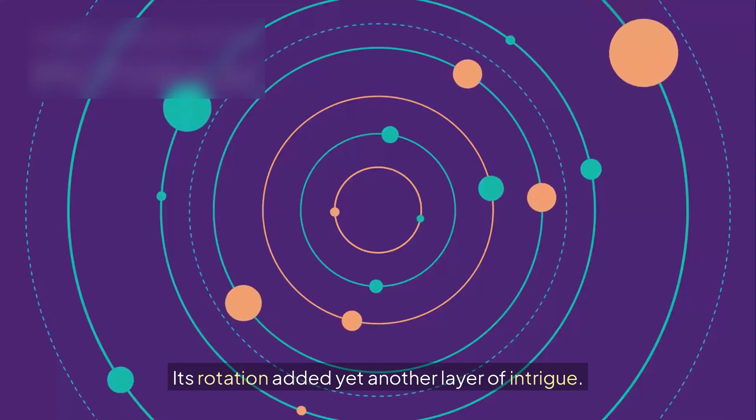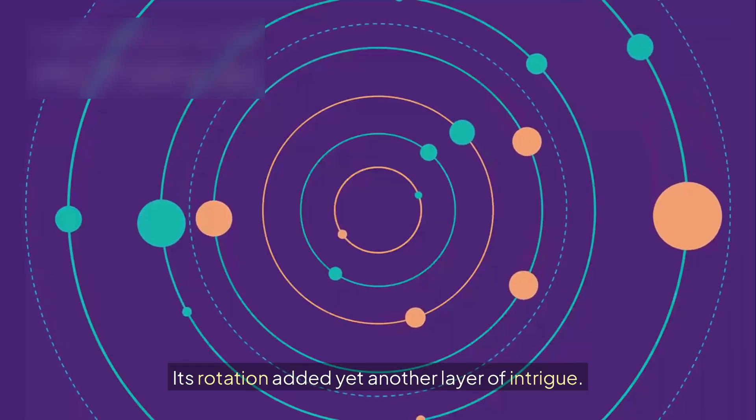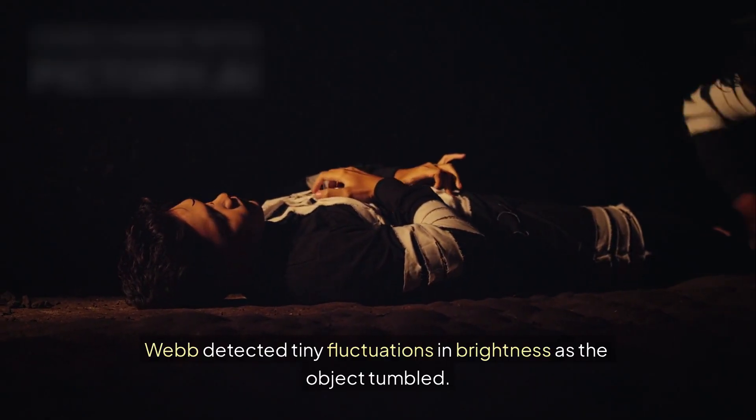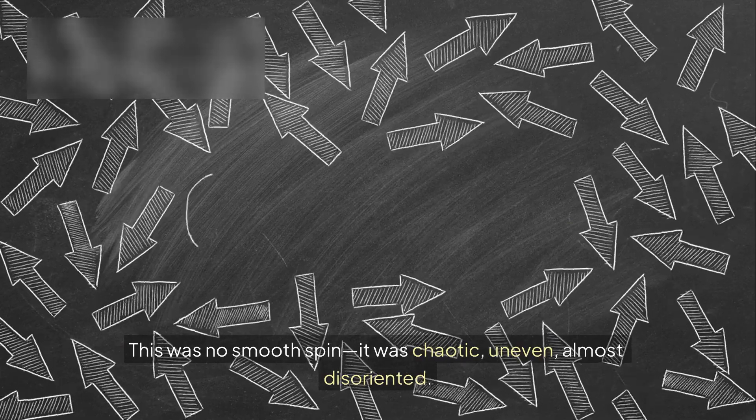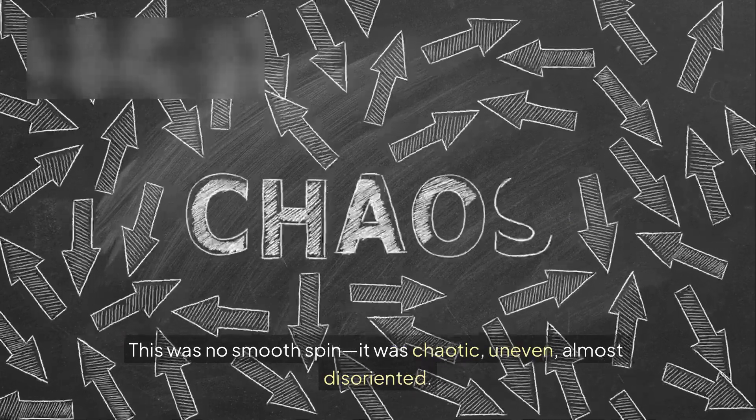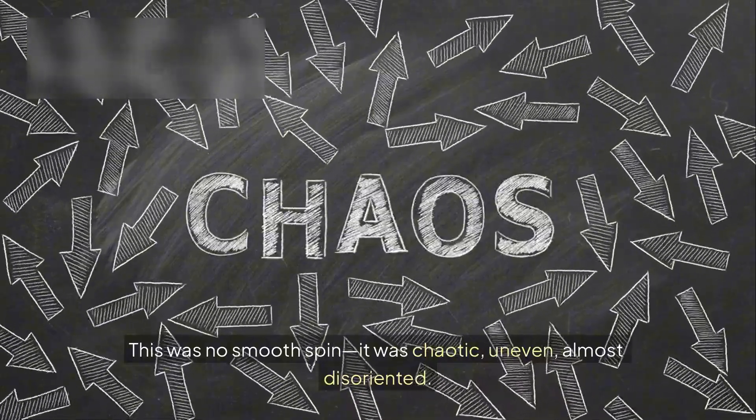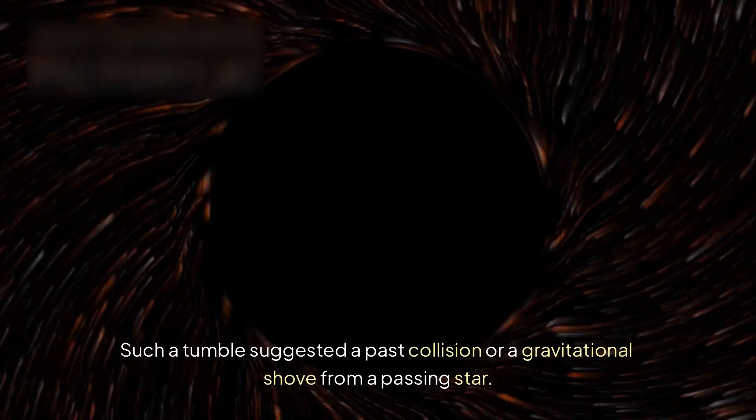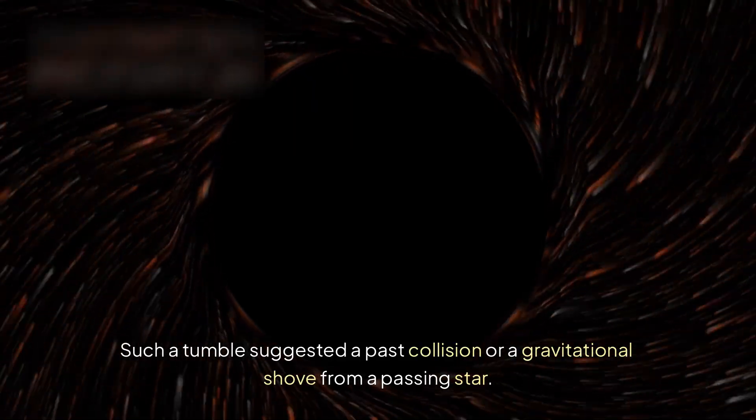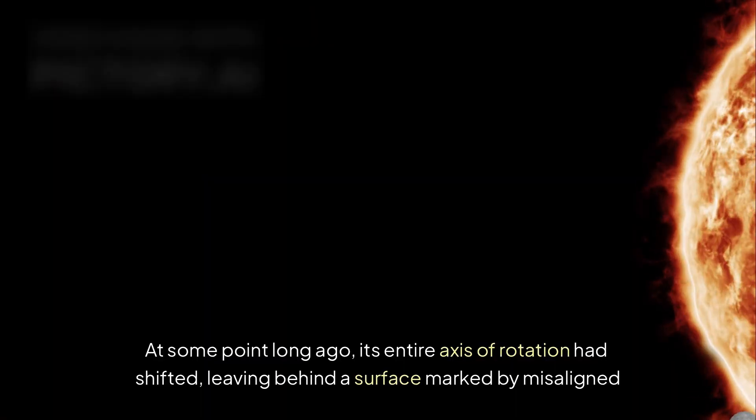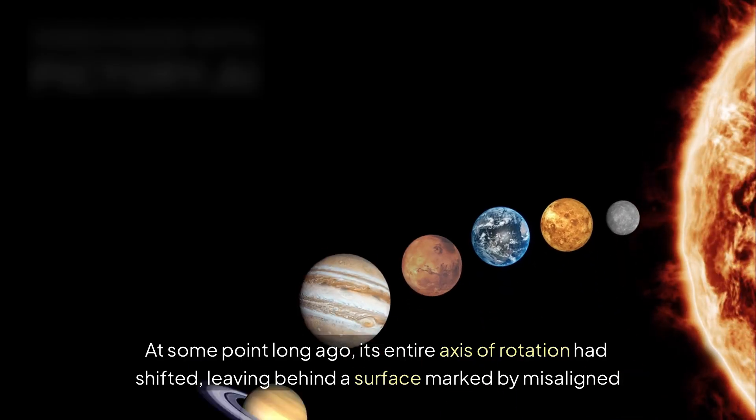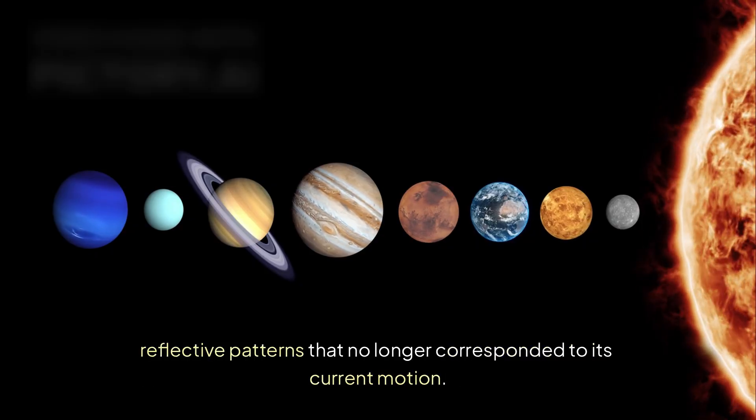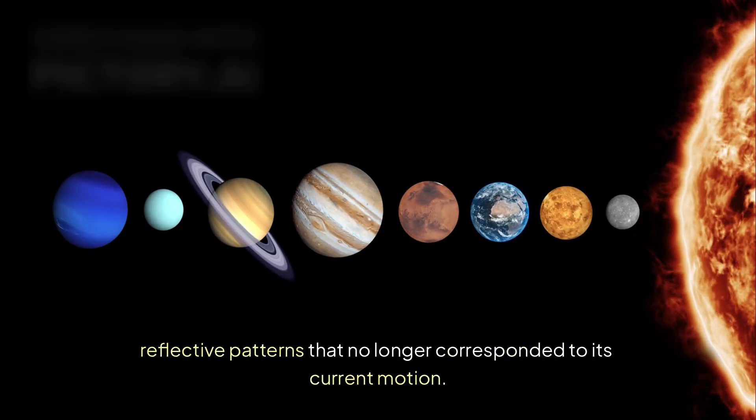Its rotation added yet another layer of intrigue. Webb detected tiny fluctuations in brightness as the object tumbled. This was no smooth spin, it was chaotic, uneven, almost disoriented. Such a tumble suggested a past collision or a gravitational shove from a passing star. At some point long ago, its entire axis of rotation had shifted, leaving behind a surface marked by misaligned reflective patterns.